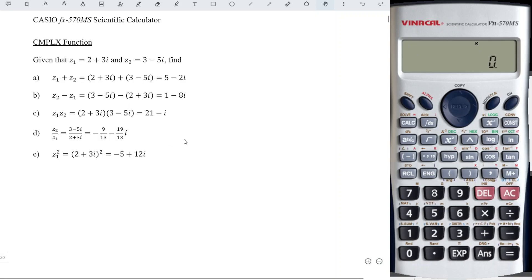For example, a for z1 and b for z2. So we can go to mode, look for complex number 2.